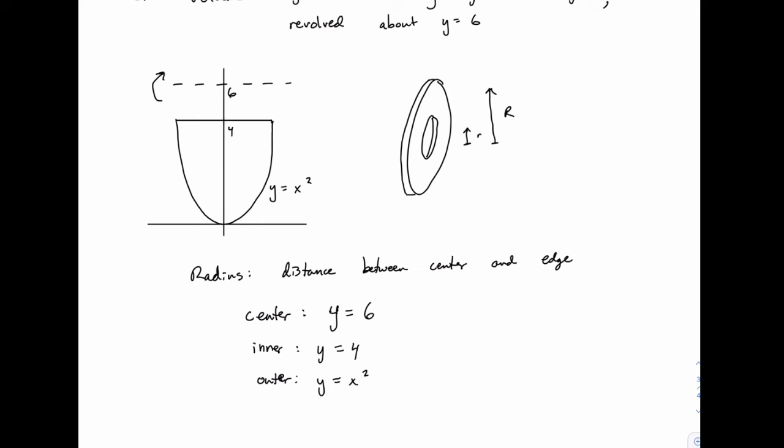So the inner radius, little r, will just be 4 minus 6, or the difference between those two. Now if you notice, you get negative 2 if you subtract that way, or you can think of it as being positive 2, because we generally think of radius as being a positive value.